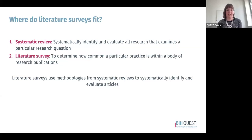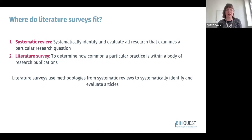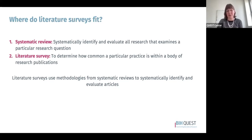So where does a literature survey fit into this? A literature survey is a form of systematic review, but it has some important differences. The goal of a systematic review is to systematically identify and evaluate all research examining a particular research question. With a literature survey, we use a similar systematic approach, but we're often doing it to determine how common a particular practice is within a set of research publications or other records. Literature surveys heavily borrow methodologies from systematic reviews, but depending on the research question, there may be steps that are different or not required.